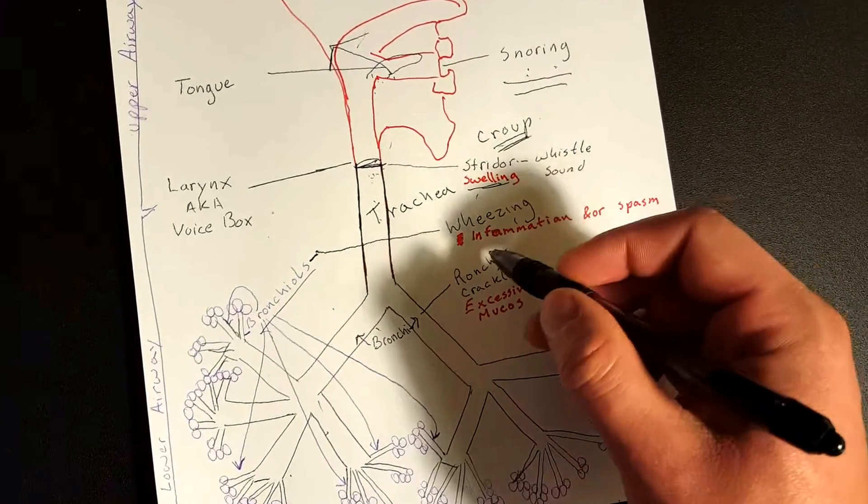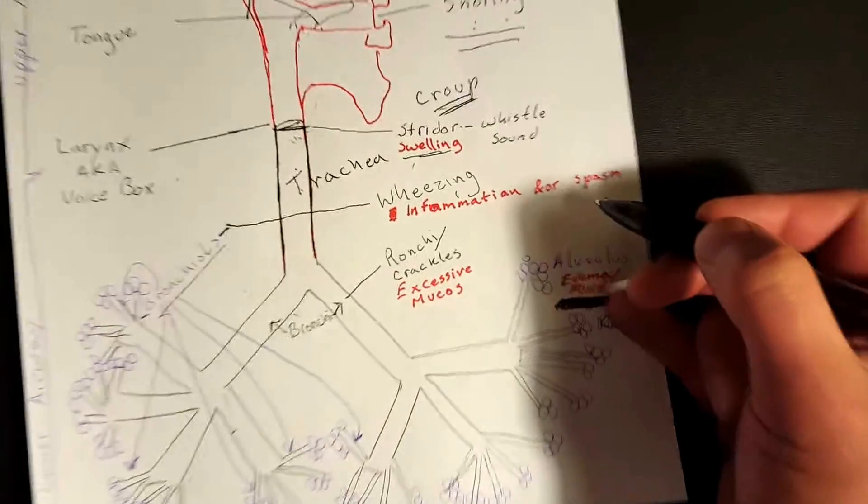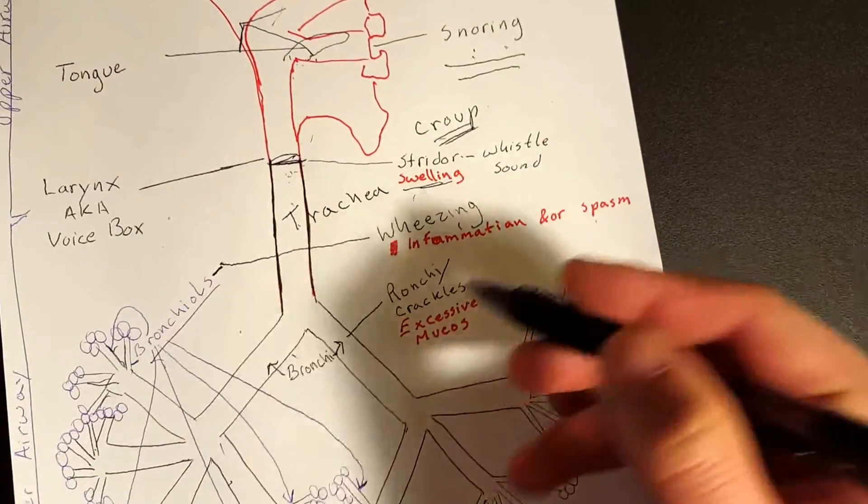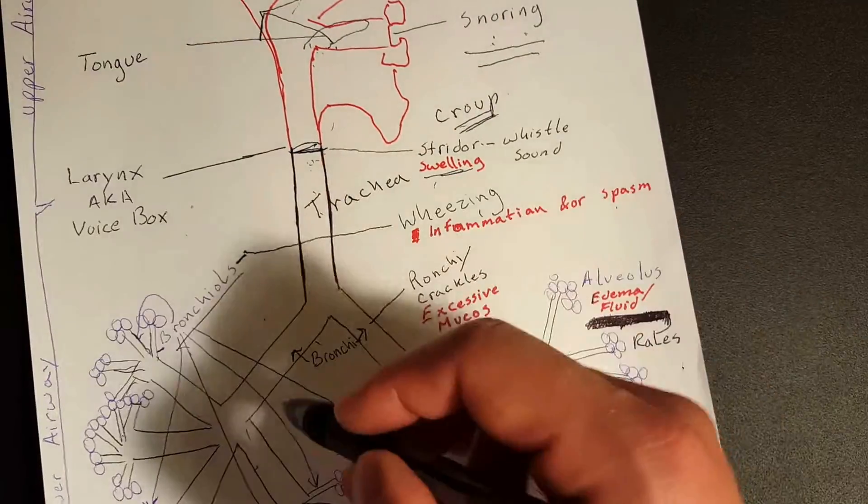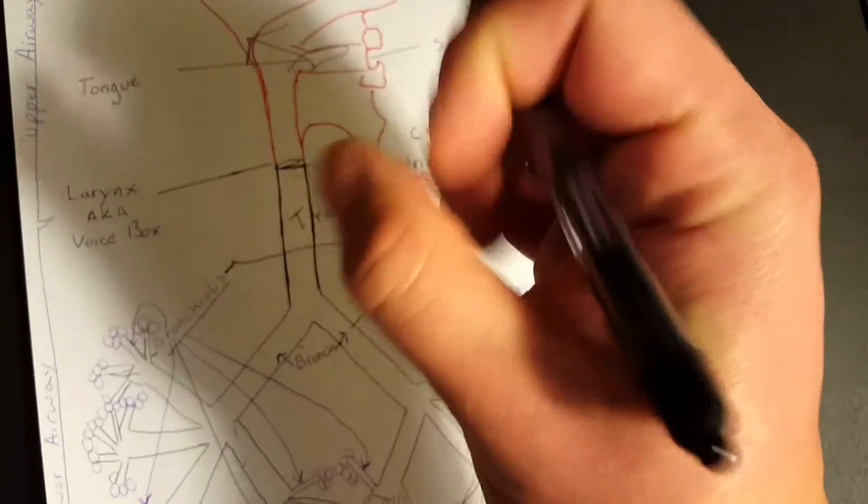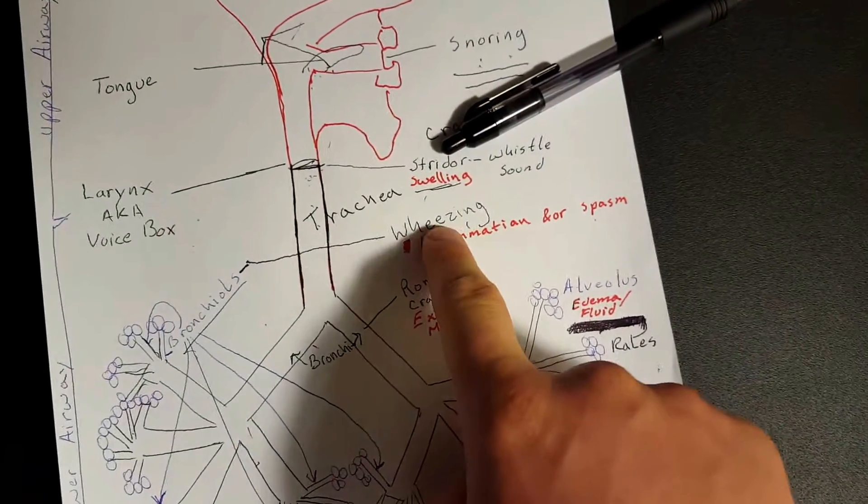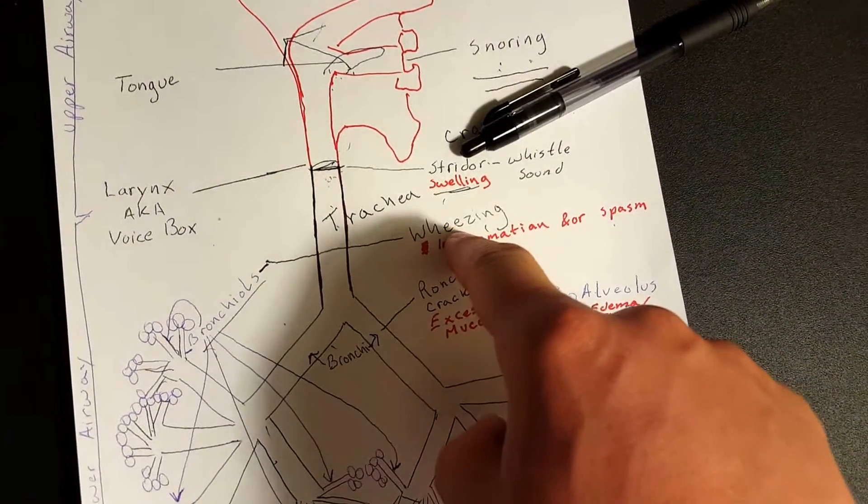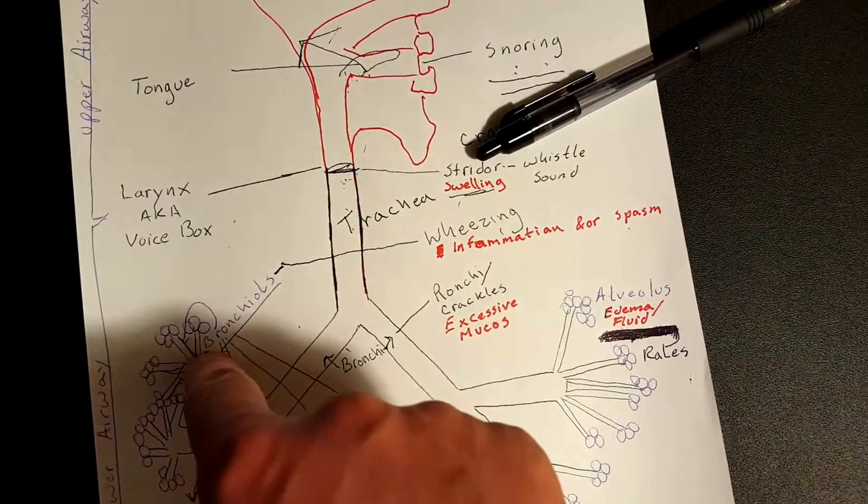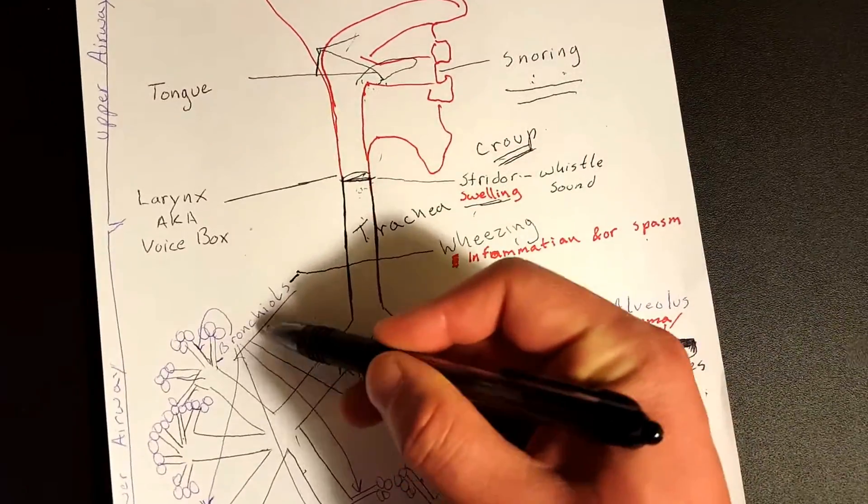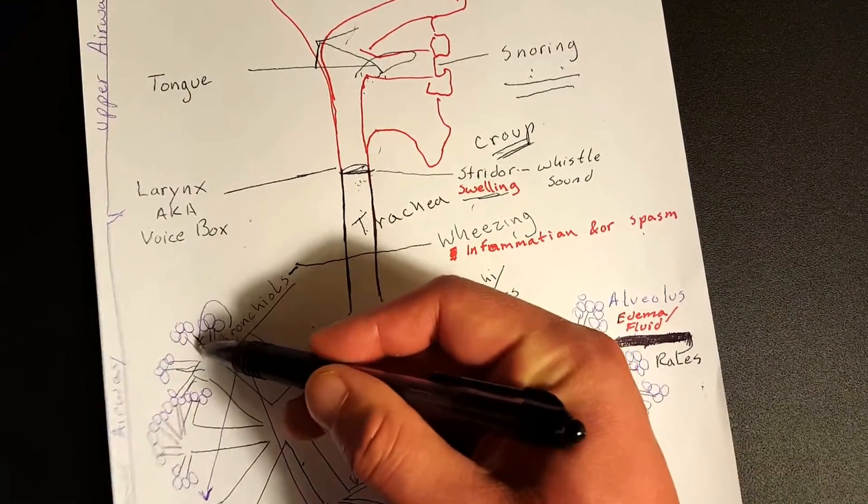But anyways, what's going on is you have spasming of the muscles. There's a muscle within the inner lumen of each bronchi and bronchiole, and they're spasming. So the muscles are spasming, they just constricted really, really hard, and that's causing that wheezing sound. So that's what's going on there. And this wheezing is a lower airway obstruction that's occurring in the bronchioles, those small little tubes right before you get to the alveoli.